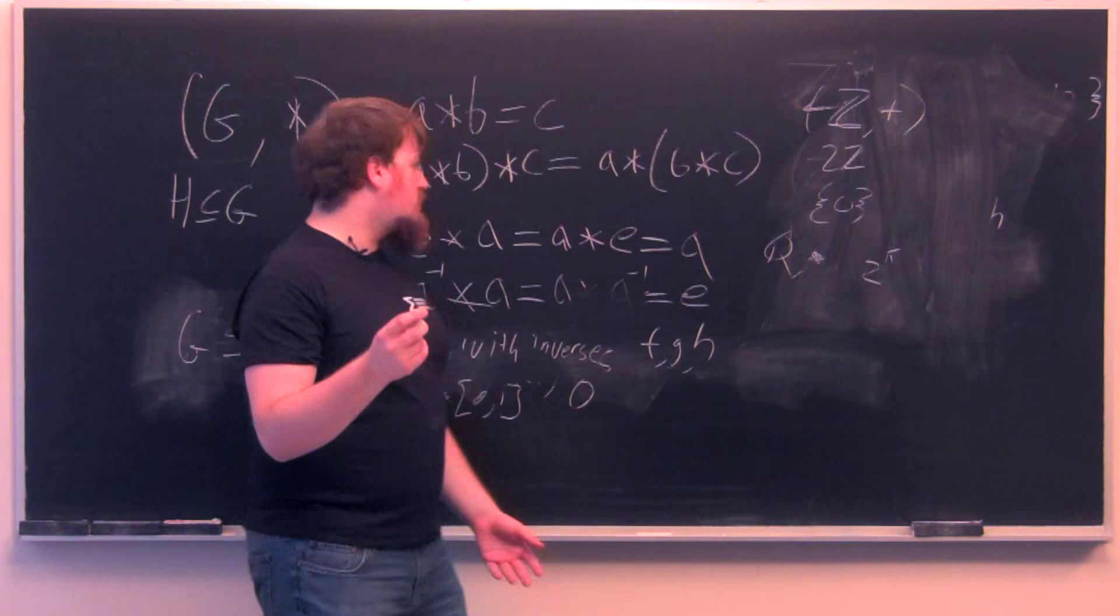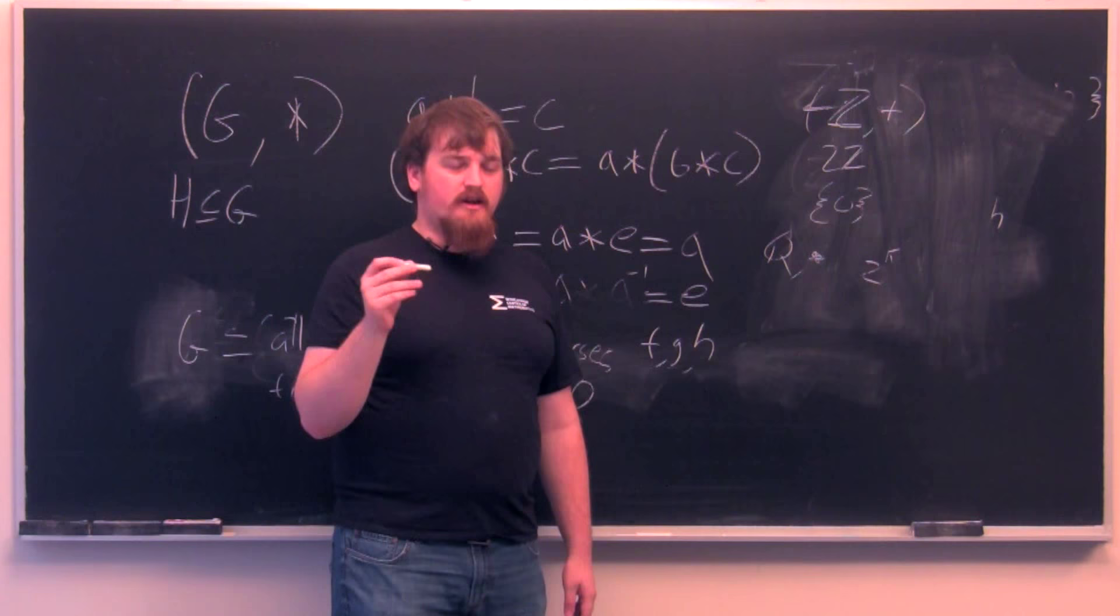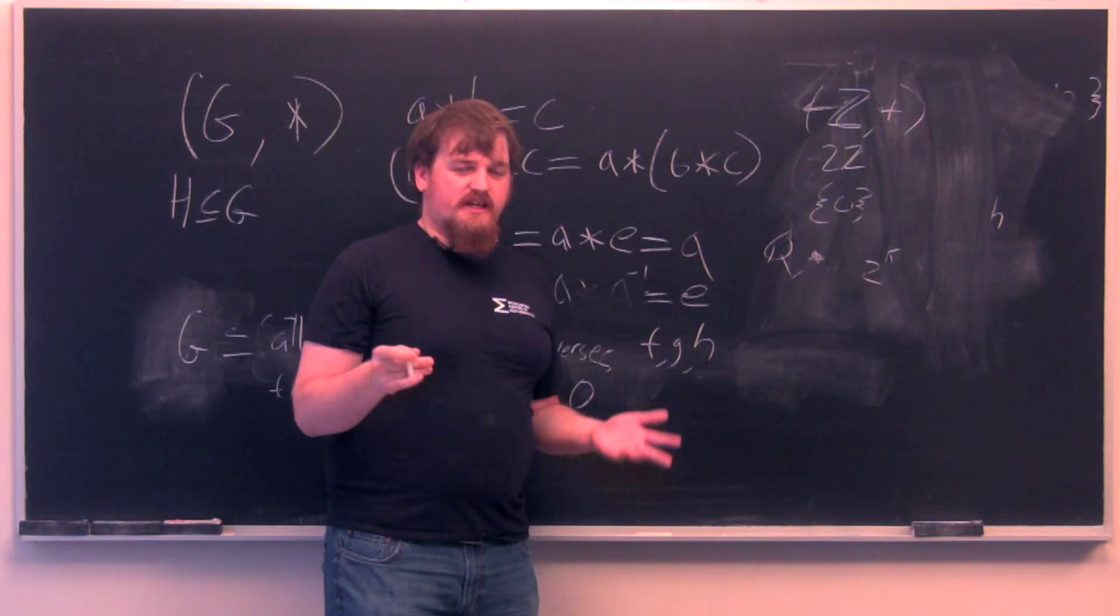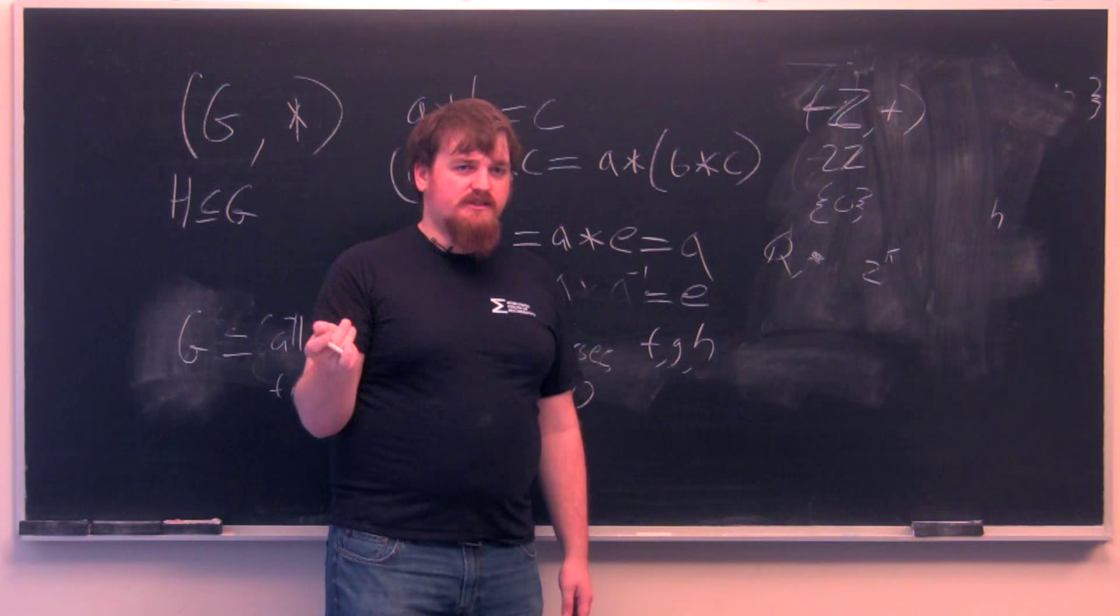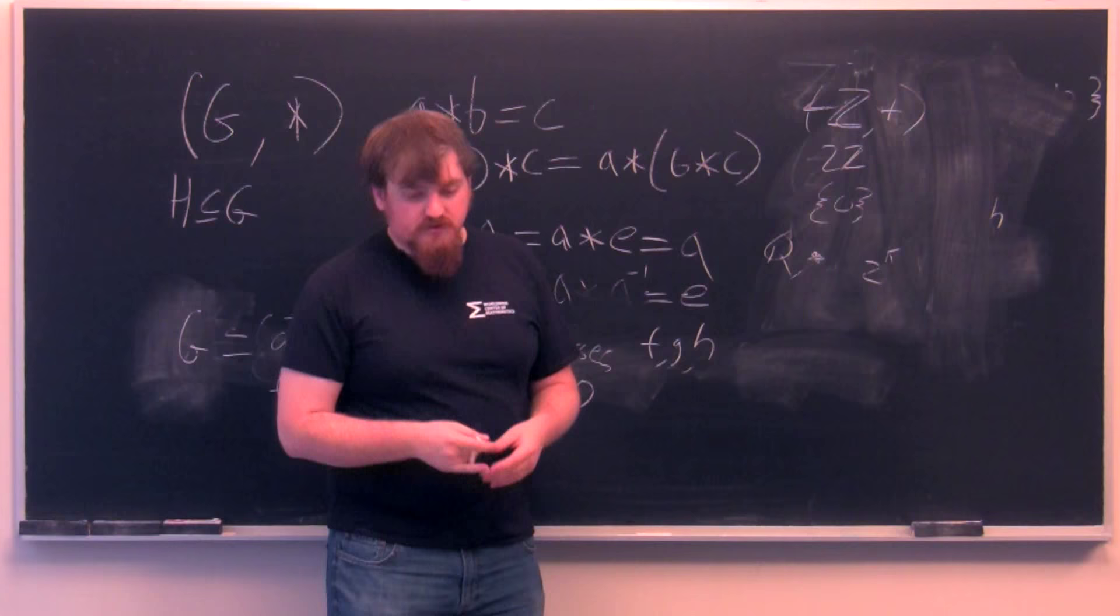So if we talked about our group of bijections from the interval 0, 1 to itself, a subgroup of this could be all of the functions which send 0 to 0, because the composition of any two functions which send 0 to 0 has to be another such function, and the inverse of any function which sends 0 to 0 has to send 0, which is sent to, back to 0, which it was sent from.